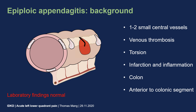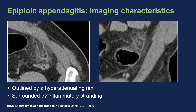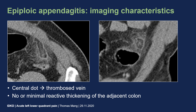The laboratory findings are usually normal. Epiploic appendagitis presents as an up to 3 to 4 cm fat-containing lesion located in the pericolonic fat tissue, adjacent to the sigmoid colon. These lesions are outlined by a hyperattenuating rim, also referred to as the rim sign, and are surrounded by inflammatory fat stranding. Within the center of the lesion, there can be either a linear or dot-like structure corresponding to the thrombosed vein, also referred to as the central dot sign.